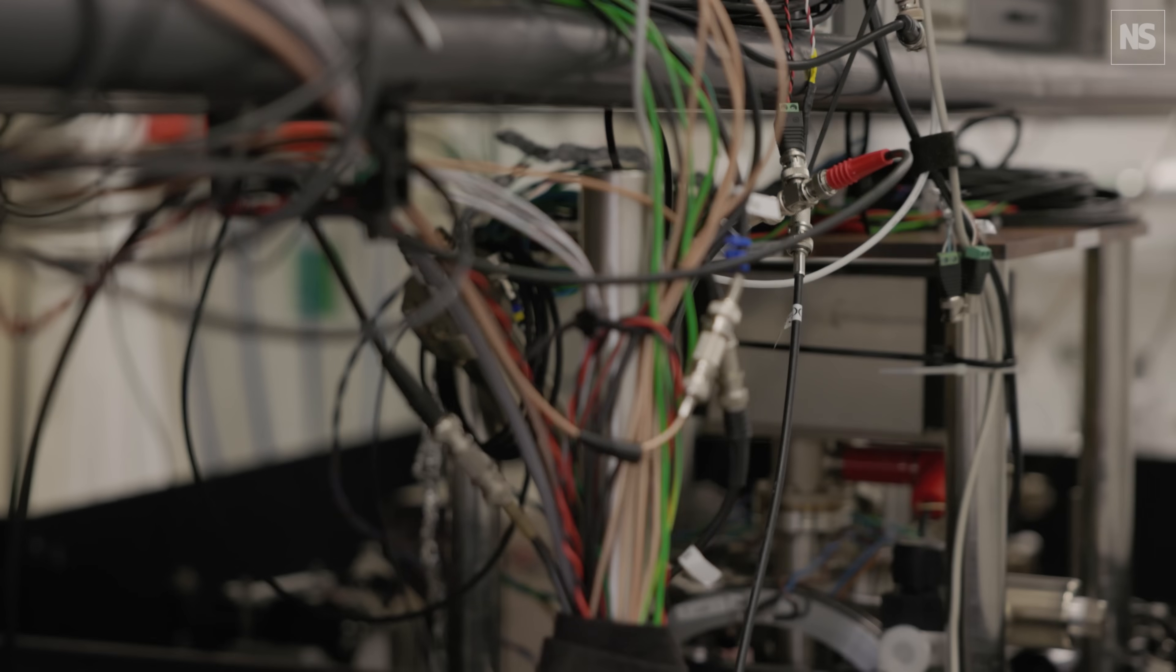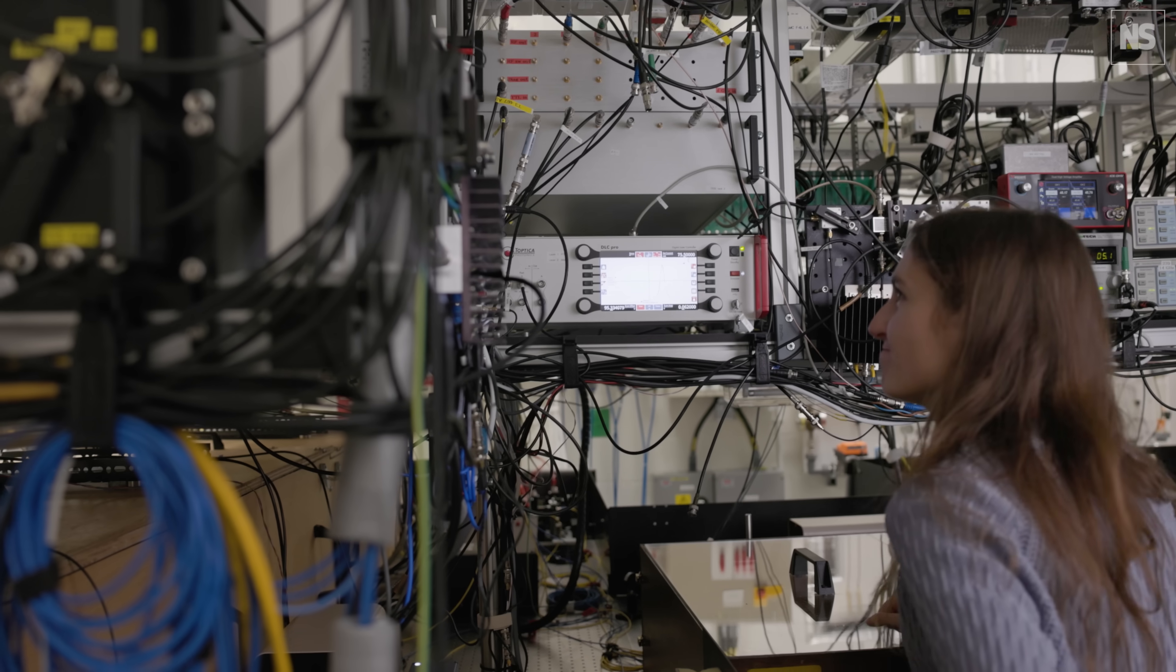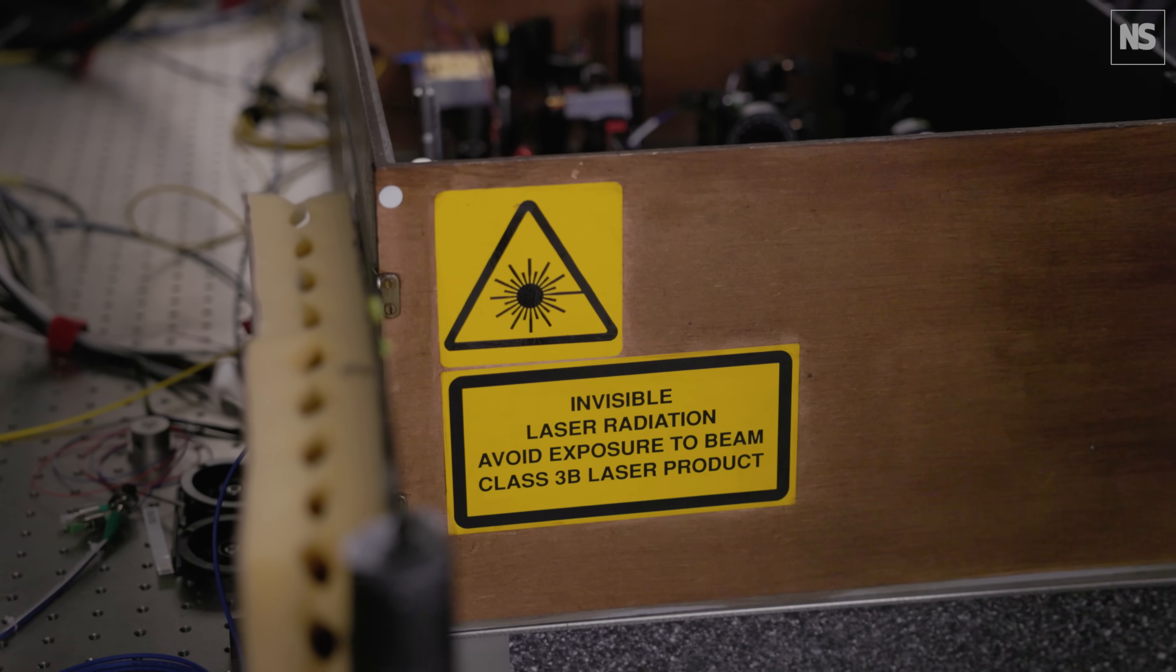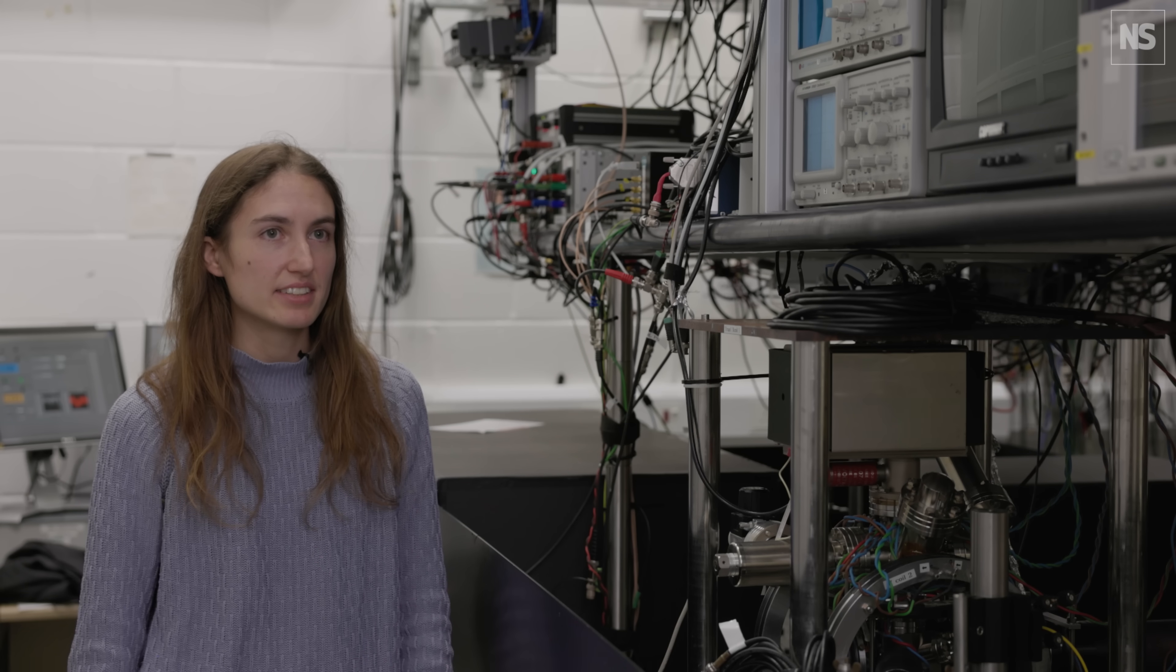Standard atomic clocks are based on an atomic transition in the cesium atom, probed with microwaves. Optical clocks are based on optical transition frequencies. Because visible light has a frequency that is five orders of magnitude higher than microwaves, optical clocks are about 100 times more accurate than the current standard of cesium atomic clocks.